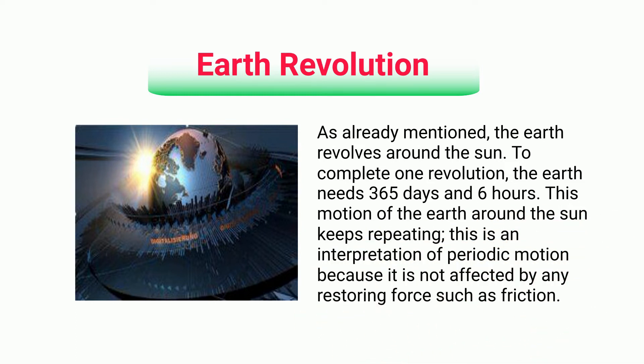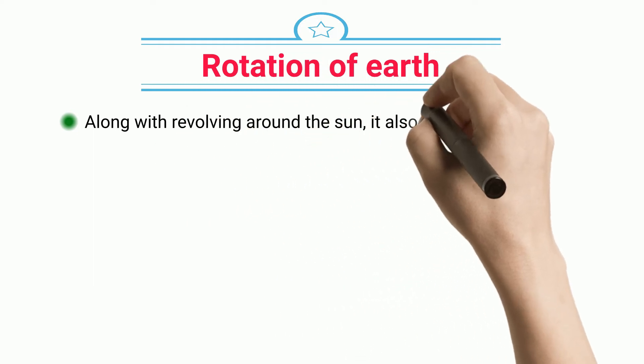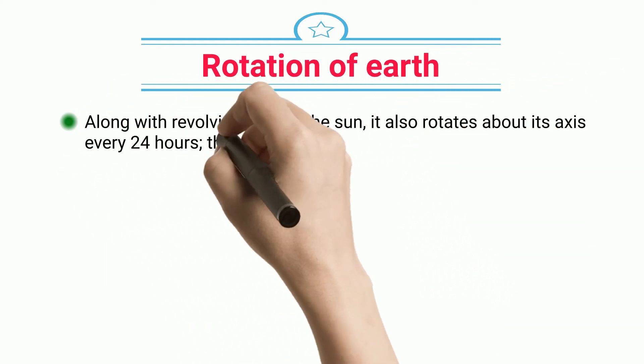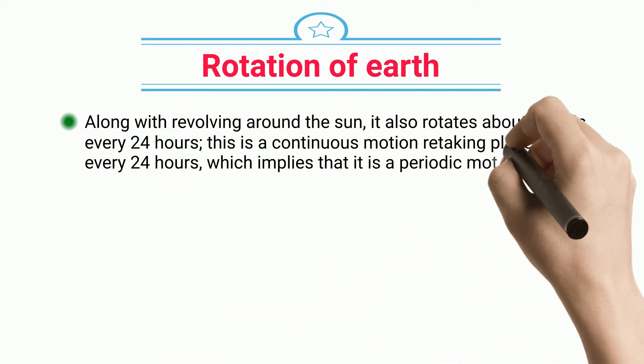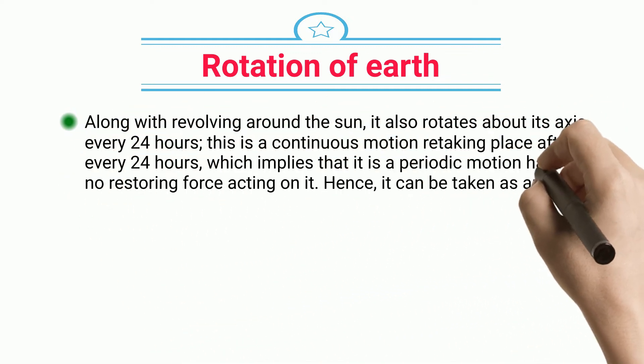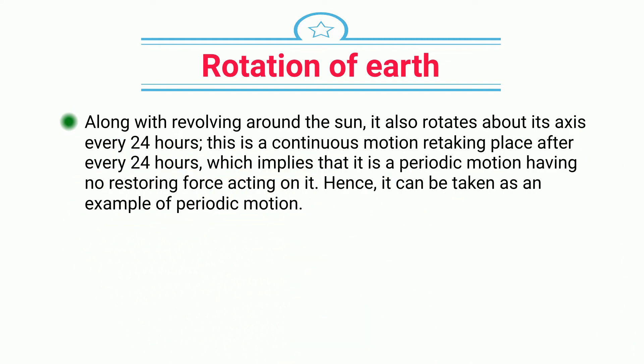Rotation of earth: Along with revolving around the sun, it also rotates about its axis every 24 hours. This is a continuous motion retaking place after every 24 hours, which implies that it is a periodic motion having no restoring force acting on it. Hence it can be taken as an example of periodic motion.